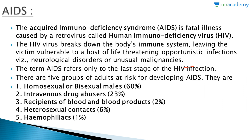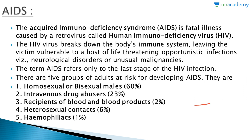It basically breaks down your nervous system so it cannot perform efficiently and becomes vulnerable to other small diseases very quickly. The term AIDS refers only to the last stage of HIV infection. There are five groups of adults at higher risk of developing AIDS — though all of us are vulnerable, these five groups are more so: homosexual or bisexual males, and intravenous drug abusers.